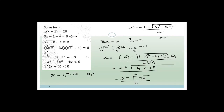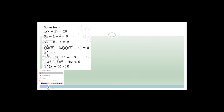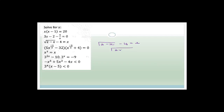Let's go through the third one. We've got √(2-x) - 4 = x. The cool thing is we can get rid of the square root by squaring everything, but first we need everything under the square root on one side and everything not under it on the other side. So we rearrange: √(2-x) = x + 4, and now we can square both sides.